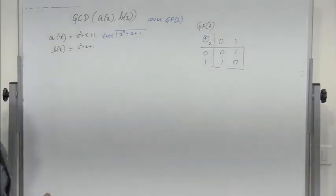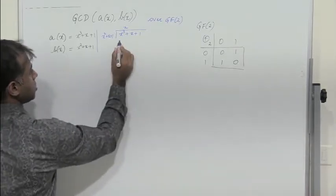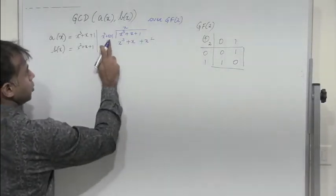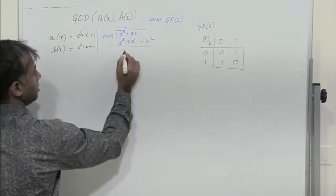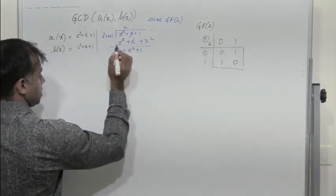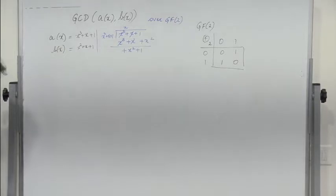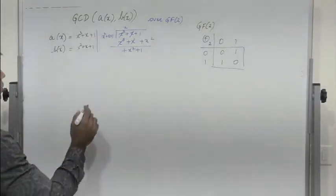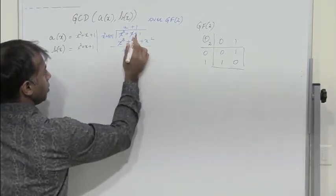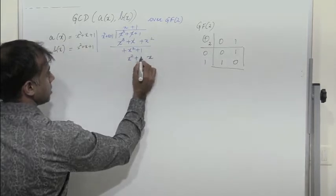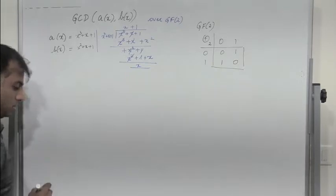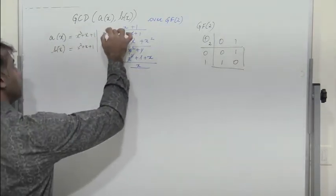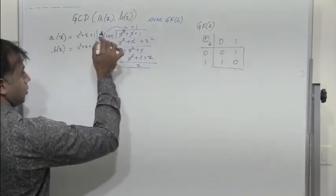We need to eliminate x² first, so multiply B of x by x to get x³ + x² + x. Then x³ cancels and x cancels, leaving x² + 1. The leading term x² must also be eliminated, so multiply B of x by 1 to get x² + x + 1. Then x² and 1 cancel, giving remainder x.